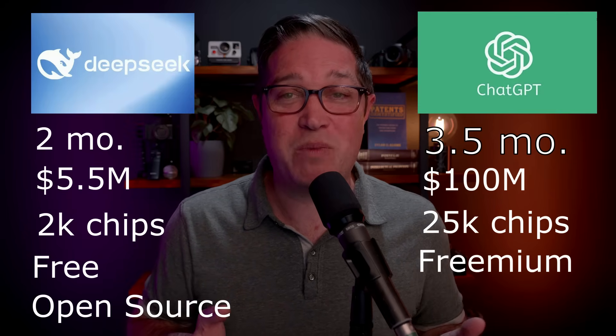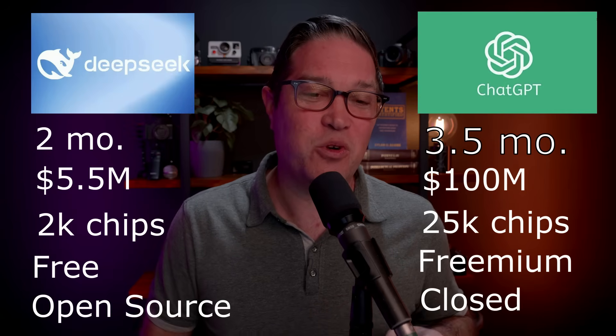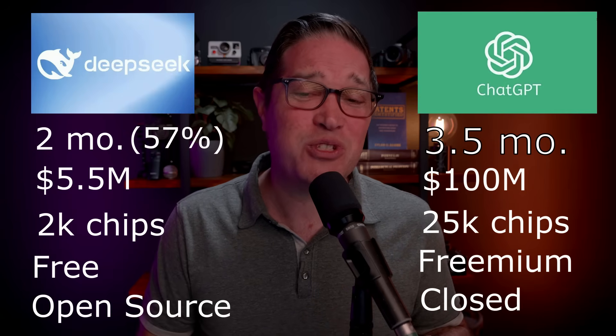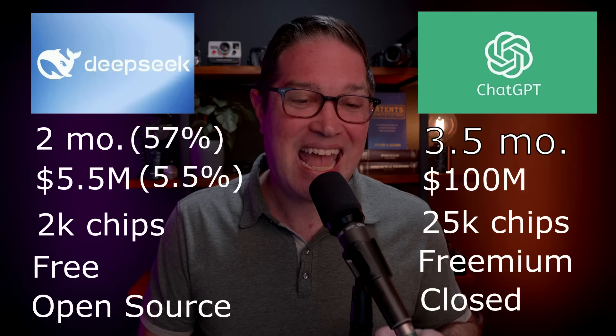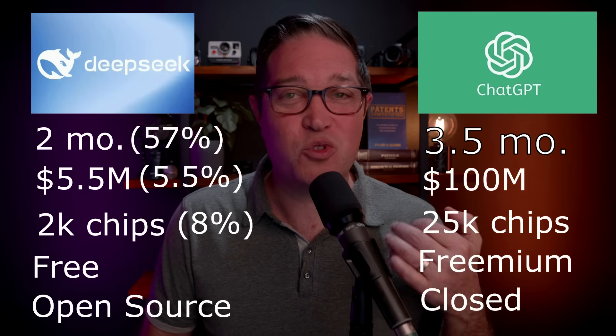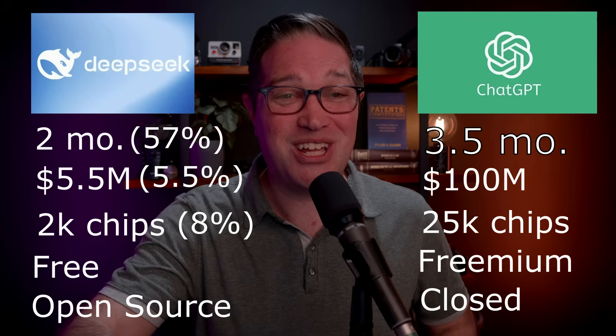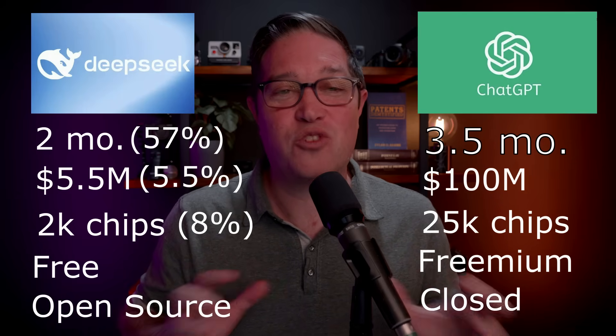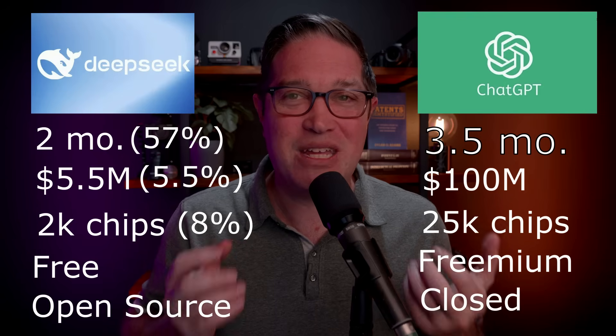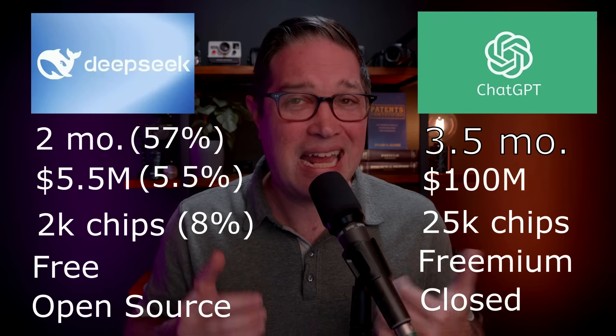Let's compare this to ChatGPT-4. It took ChatGPT-4 3.5 months to train their model, it cost them $100 million, took 25,000 Nvidia chips, and they still have a paid subscription for premium use, a way more expensive API, and they're not open source. In terms of percentages, that means DeepSeek took less than 60% of the time, 5.5% of the cost, and only 8% of the chips to train the model — a major disruption in how AI is trained, monetized, and how much it costs.